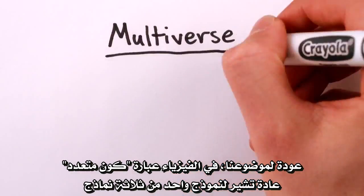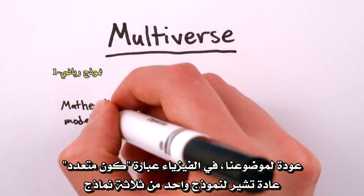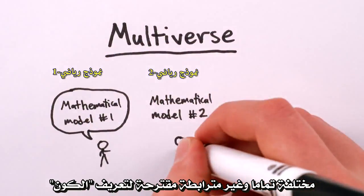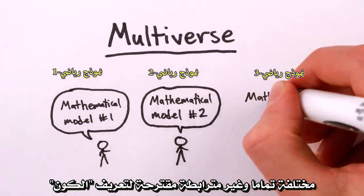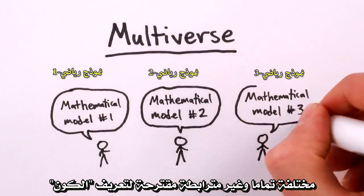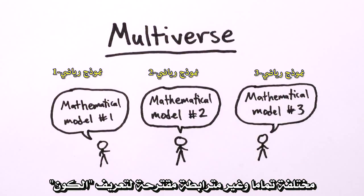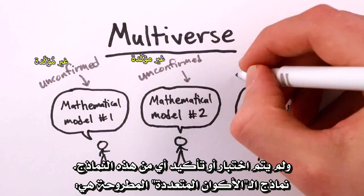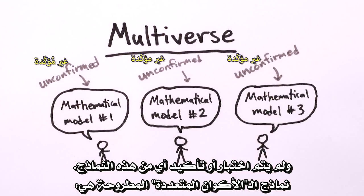In physics, the word multiverse normally refers to one of three distinct and largely unrelated proposed physical models for the universe, none of which has been tested or confirmed by experiment, by the way.